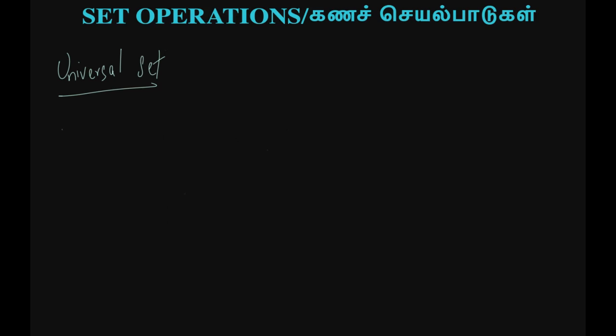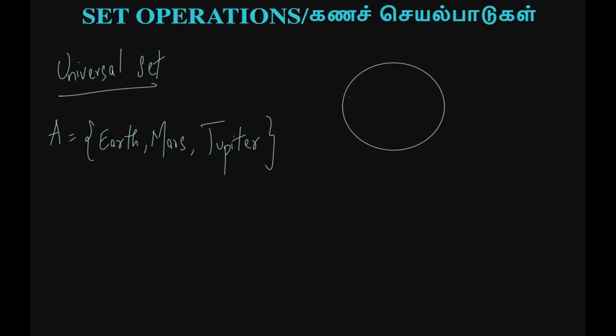One simple example: Set A is equal to {Earth, Mars, Jupiter}. So if the moon has one planet in our solar system, Set A has one example. When the Venn Diagram has one set, we can denote it with a circle. I am going to draw a circle. This is Set A — Earth, Mars, Jupiter.